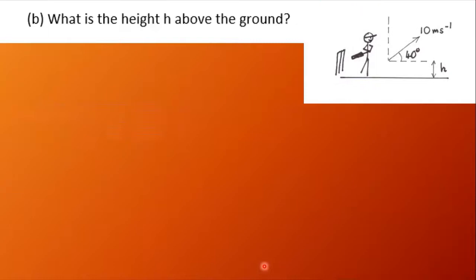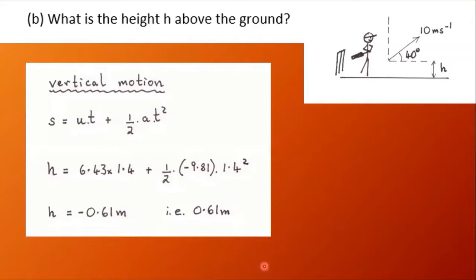What is the height above the ground, the height h at which the ball is struck? Let's consider vertical motion. Vertically, h equals the initial vertical velocity times the total time of flight plus a half times minus 9.81 times the total time squared, and this gives us h is minus 0.61 meters. In other words, from the starting point the resultant displacement is 0.61 meters that way, so h is 0.61 meters.